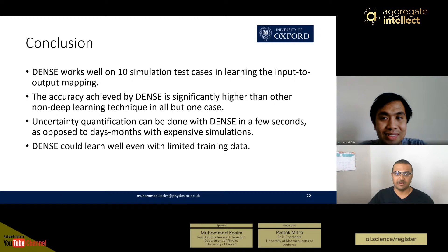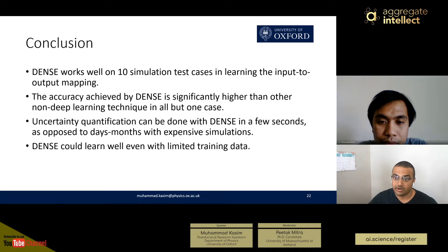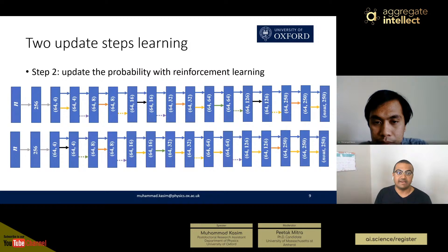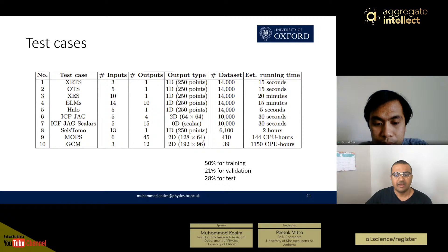Thank you so much, Mohamed. This was a really interesting talk with a lot of interesting ideas. We have a few questions from the audience. One attendee is asking: why are we using the neural architecture search here? Is it to find the best hyperparameters or best number of layers? Could you go back to the slide where the architecture was shown — the two-step one — so the question is, why are we using the neural architecture search and what is the idea behind assigning probabilities to these different layers?